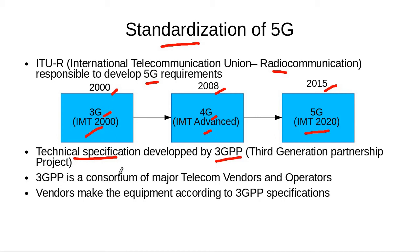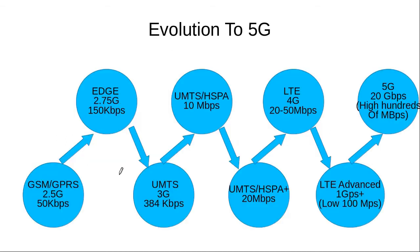Now talking about the evolution in mobile communication systems from 1G to 5G, the key factor driving this evolution is the need for more and more data rate as required by users. For example, when we talk about the GSM system — GSM was the second generation system — GPRS was added as an add-on to the GSM system.